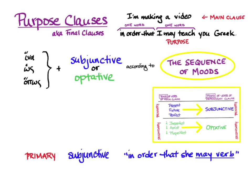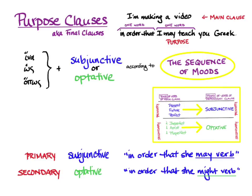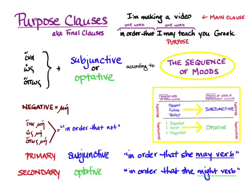When I introduced the subjunctive, I said I'd give default translations for each use. Here's your first one: the subjunctive in a purpose clause in primary sequence is 'in order that she may verb.' If we need secondary sequence — if the main verb is in a tense of the past — then we use the optative for purpose clauses and translate 'in order that she might verb.' A negative purpose clause uses mē for the negative, usually right after the conjunction: hina mē, hos mē, or hopos mē, each translatable as 'in order that not,' or in a slightly archaic word, 'lest.'